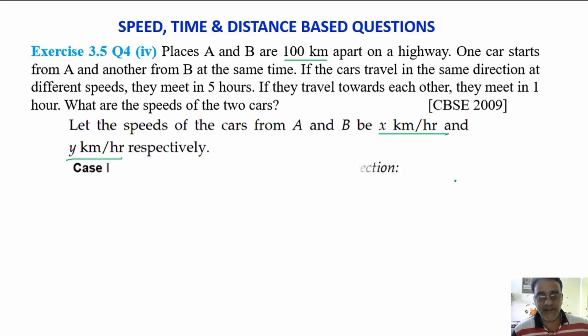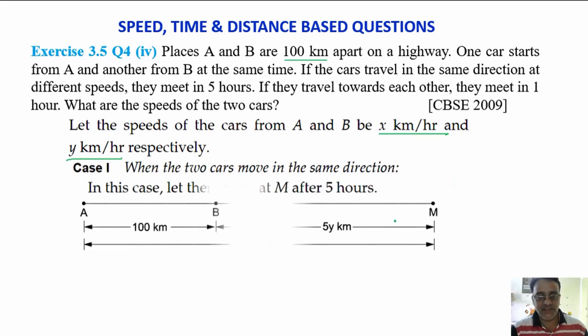Case number one, we are going to take when the two cars move in the same direction. This is the figure. Suppose this is the first car at A and this is the car at B and the distance between these is 100 km. One car starts from here and another car starts from here. Suppose they meet at point M.